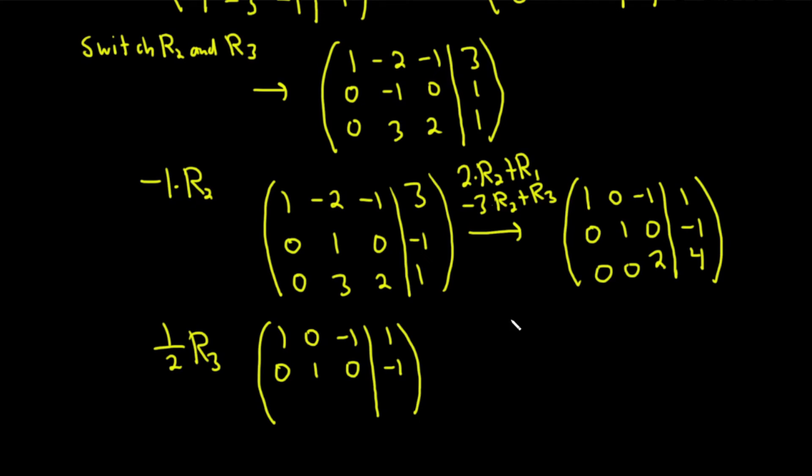So 1 half times row 3. So it's going to be 0, 0. And then the 2 is going to become a 1 and the 4 is going to become a 2. And to finish, we're just going to add row 3 to row 1. So we'll do row 3 plus row 1.